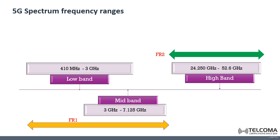To recap: 1G was developed in the 1980s and was completed in the early 1990s. It is based on an analog system and the speed in 1G reached up to 2.4 kilobits per second. It allowed users to make voice calls within one country without roaming.